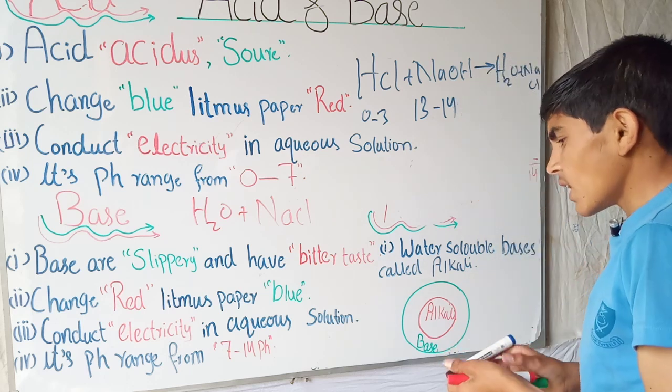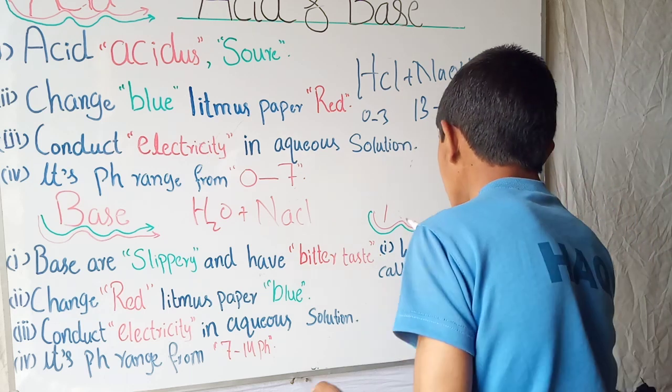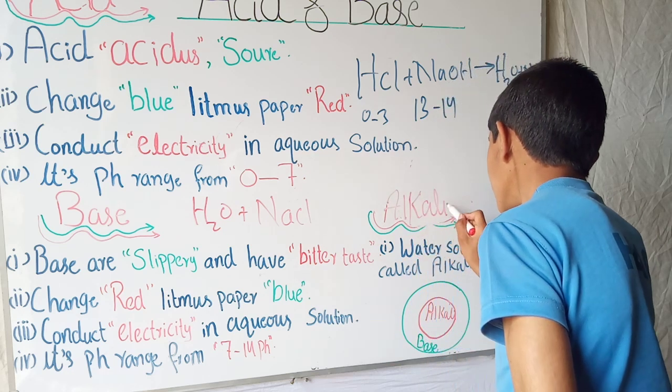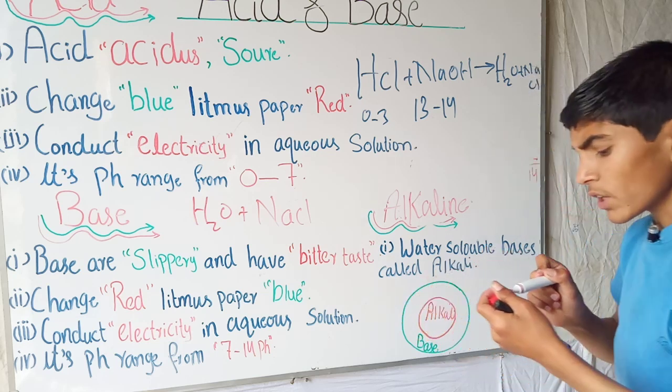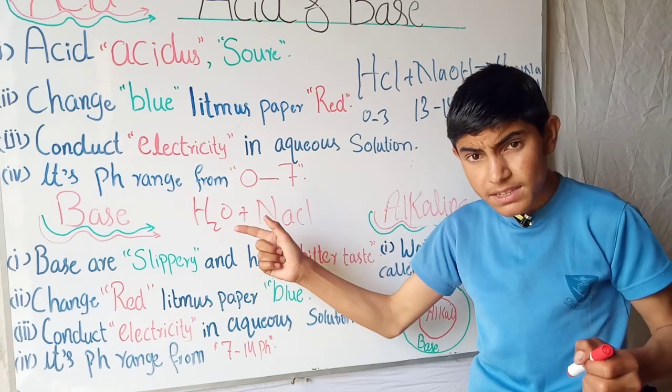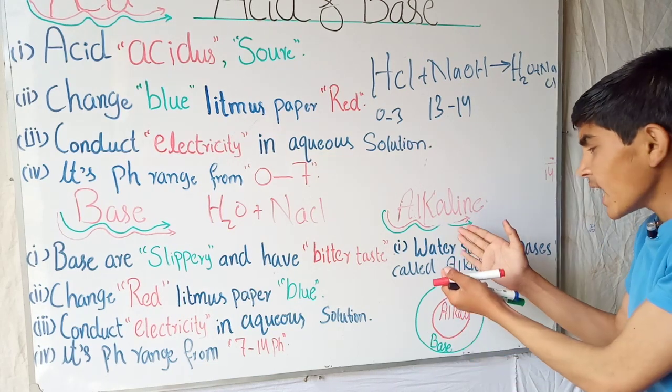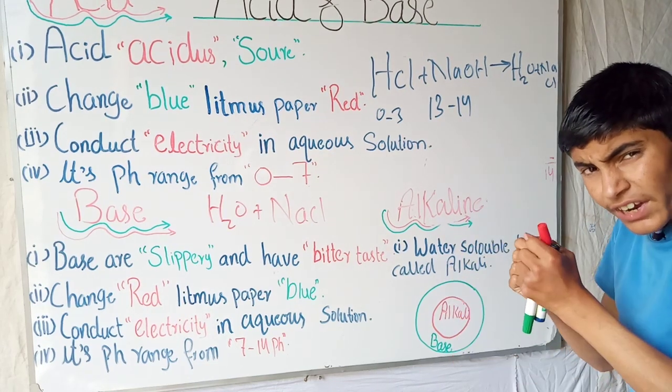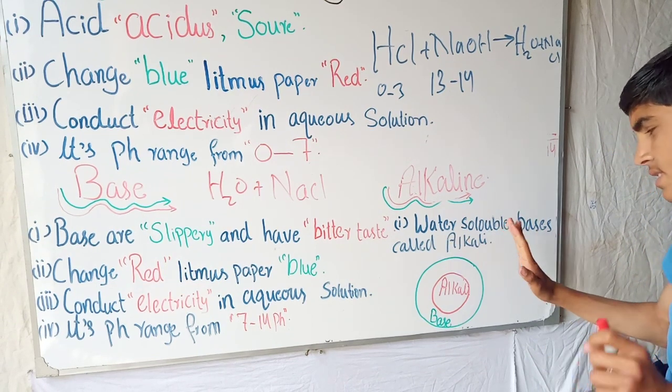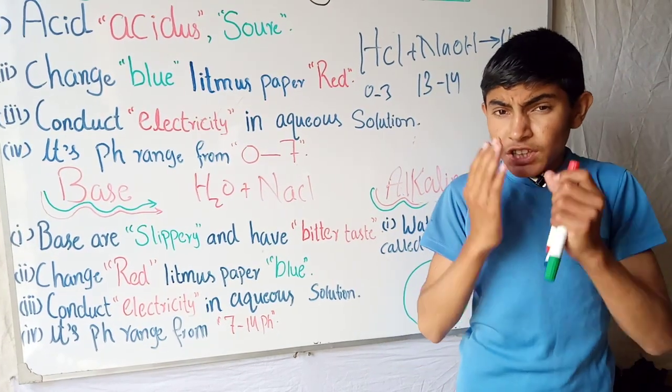The third one, and most important, is alkaline. Alkaline is also a part of the base. Water-soluble bases are called alkalines.